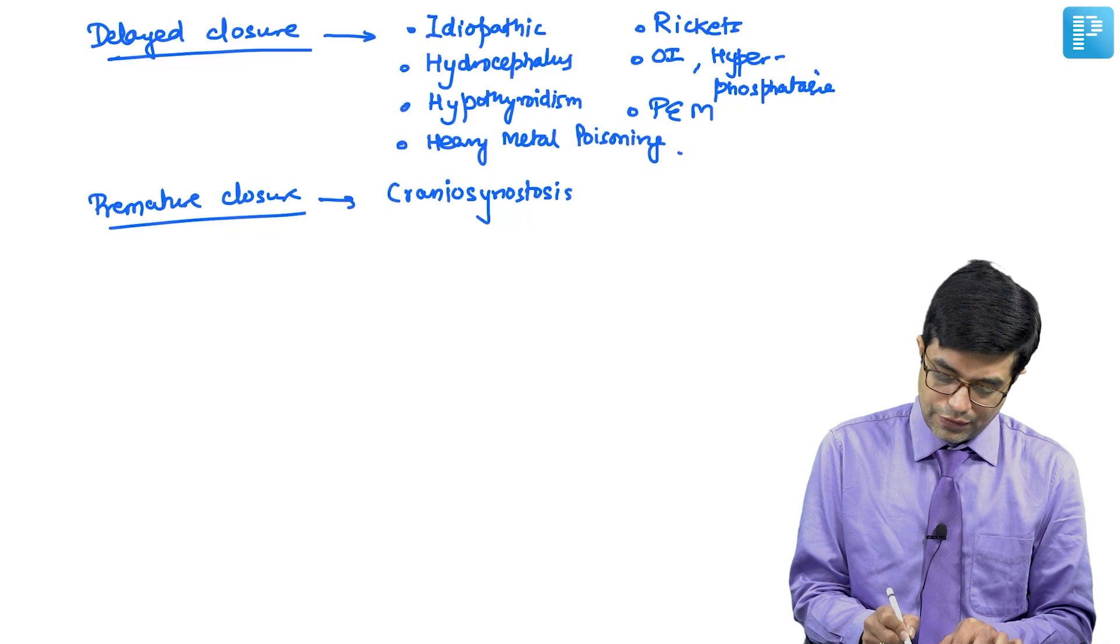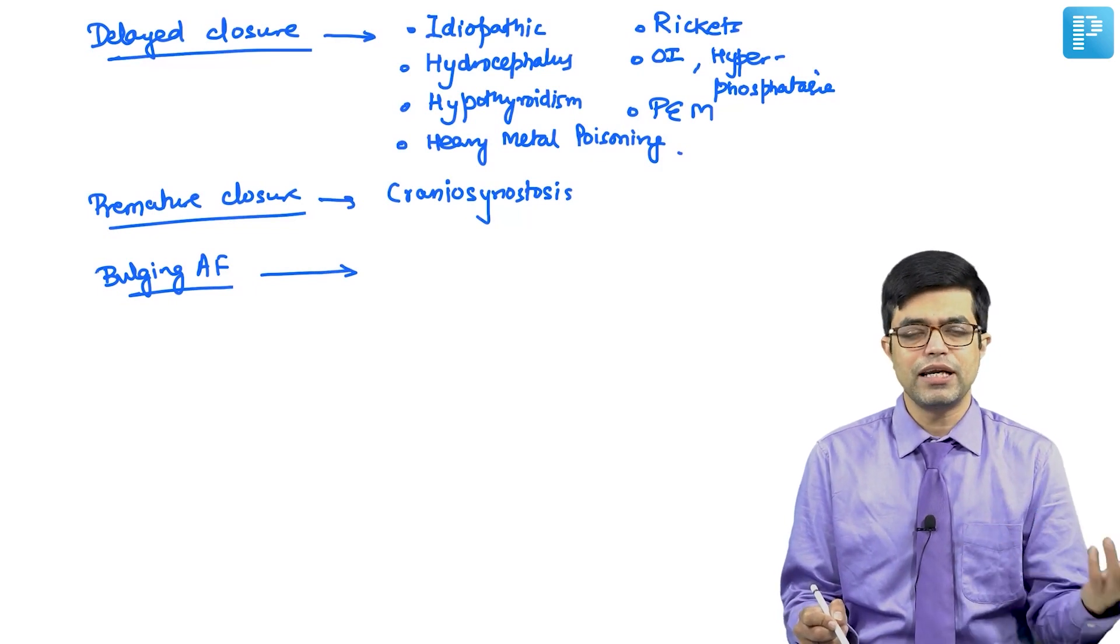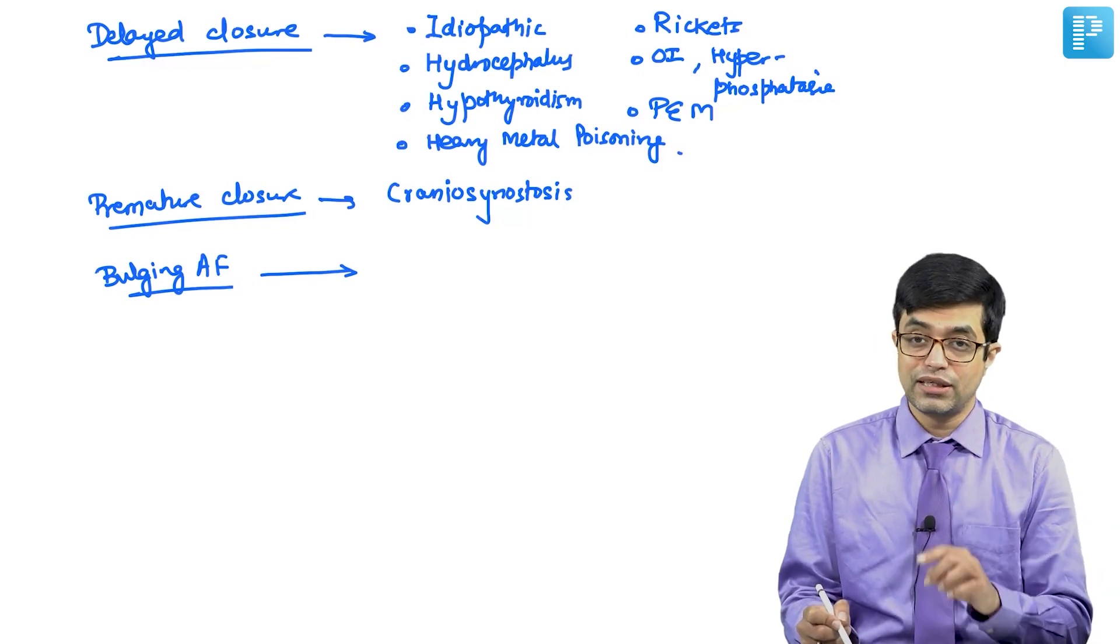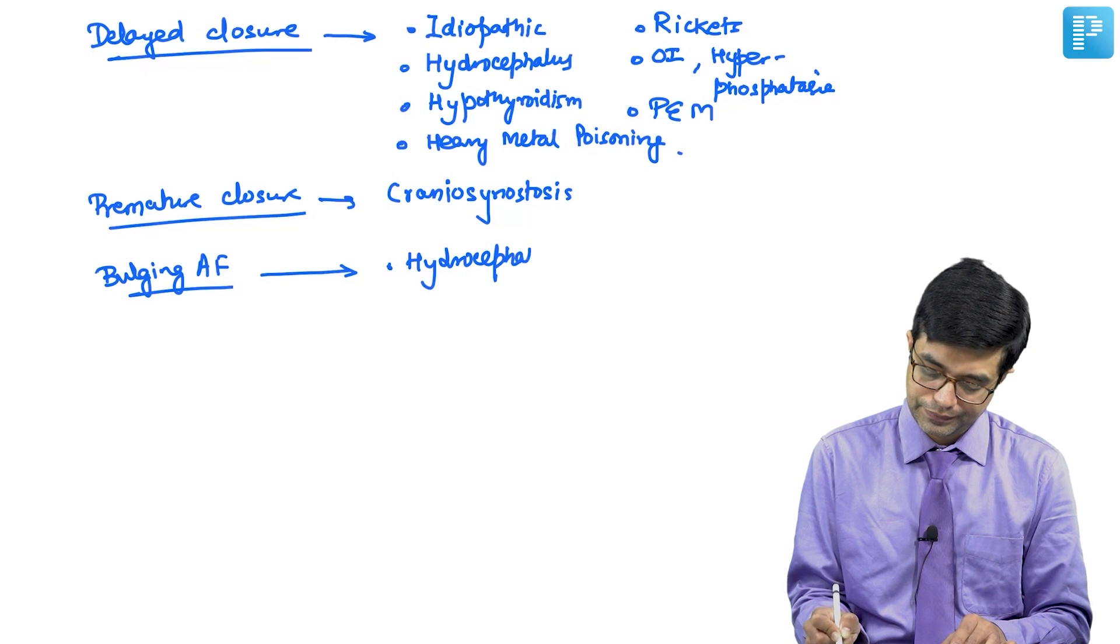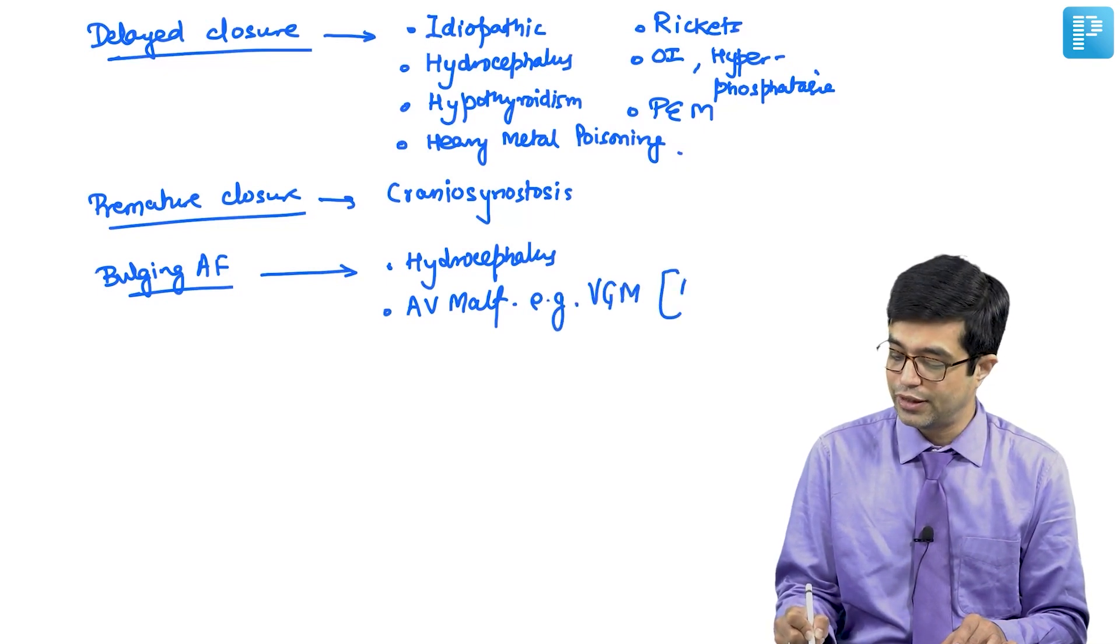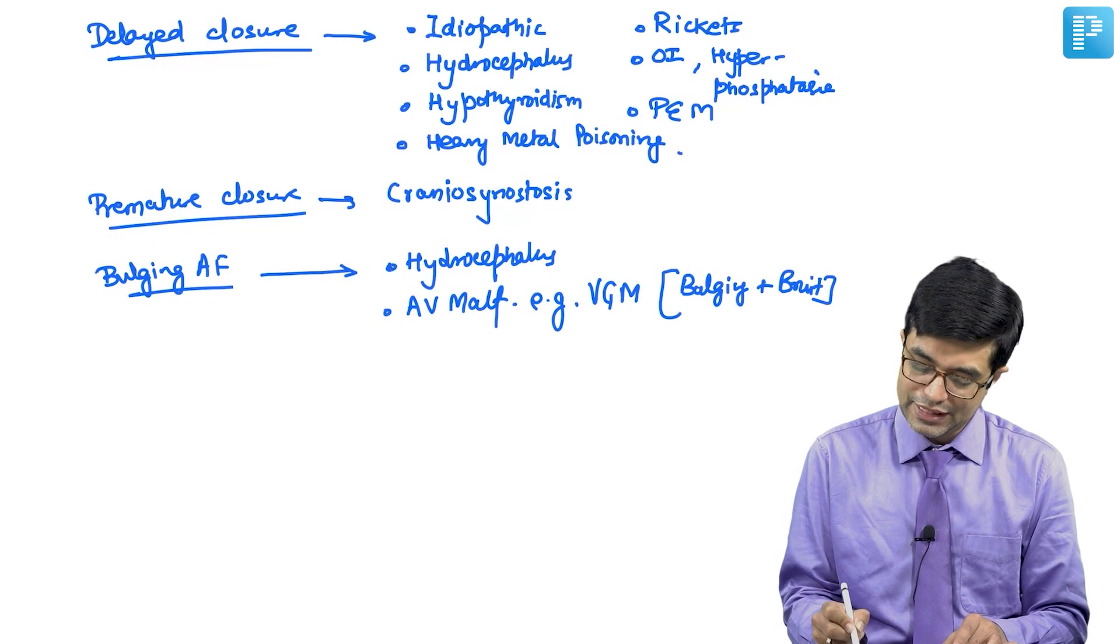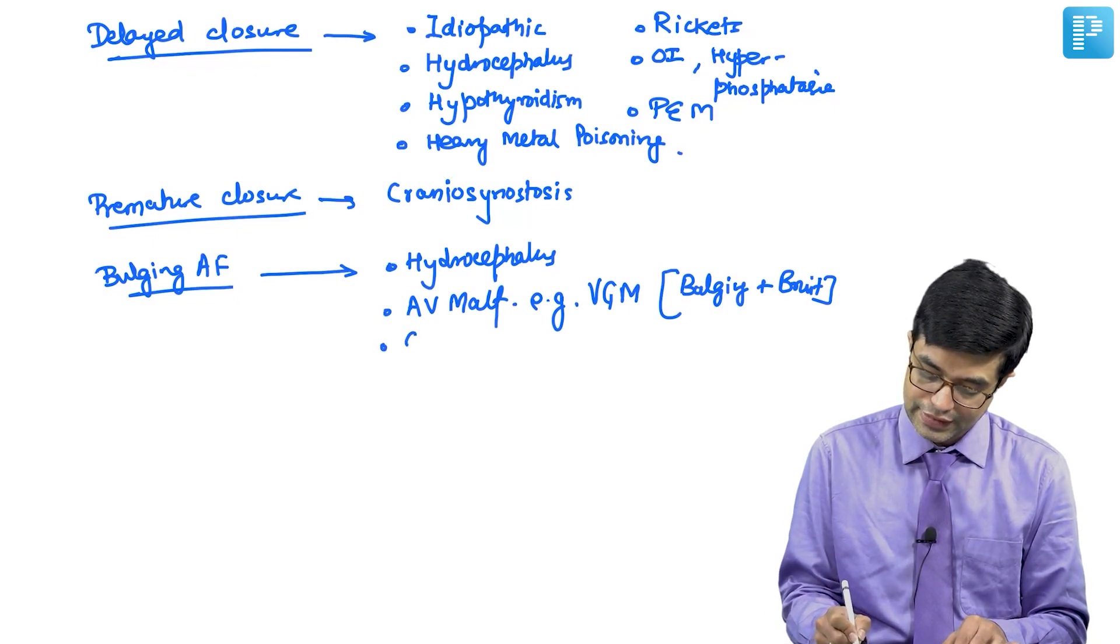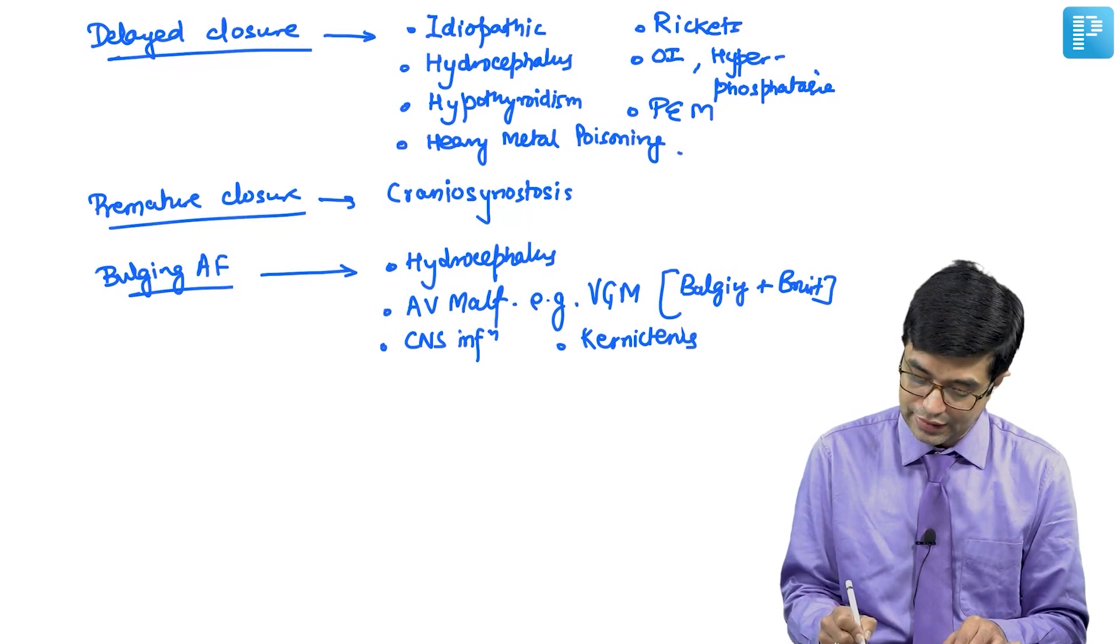Then you have causes of bulging anterior fontanel. Anything which raises the intracranial pressure will cause it to bulge. Transient bulging can be seen in crying, but that is normal. Persistent bulging can be seen in conditions like hydrocephalus, arteriovenous malformations, example vein of Galen malformation where bulging anterior fontanel will be associated with a bruit. It can be seen in CNS infections, kernicterus and CNS hemorrhage.